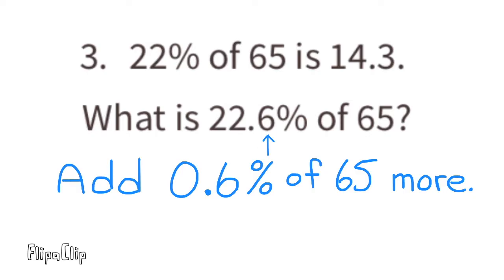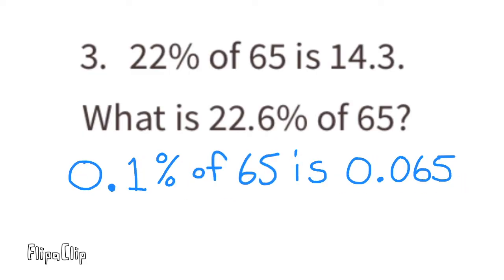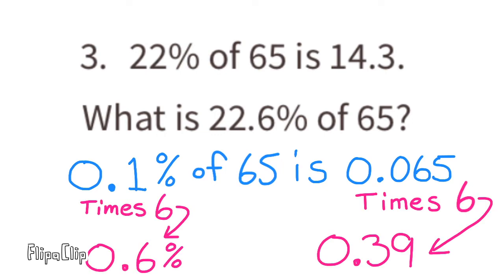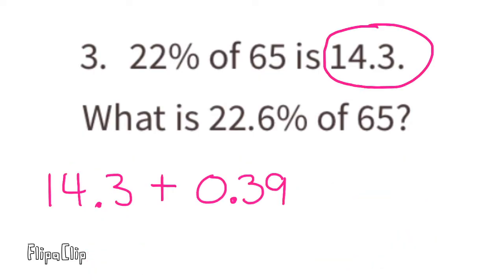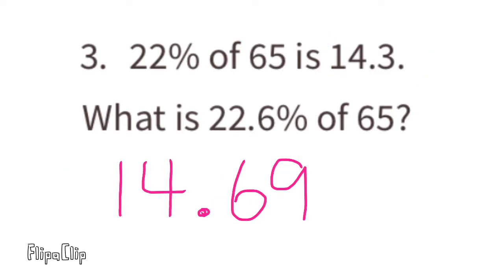One method is to find 0.1 percent of 65 and multiply that by 6. Zero point one percent of 65 is 0.065. Multiplying by 6 gives 0.39. Then 14.3 plus 0.39 equals 14.69. So 22.6 percent of 65 is 14.69.